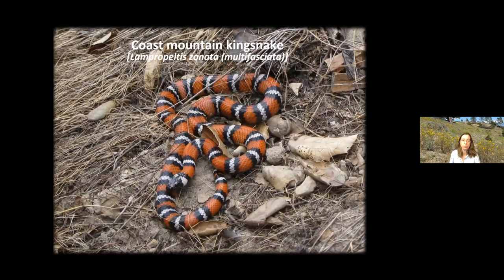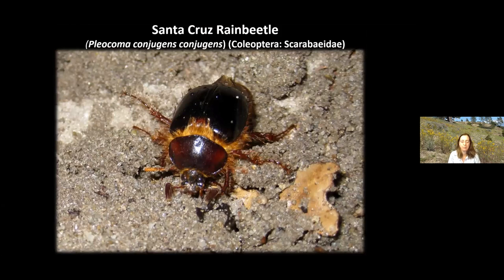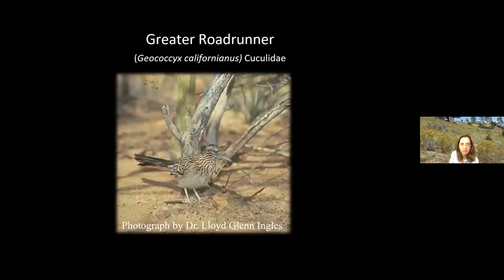Mountain king snakes are found in the Sandhills. The Santa Cruz rain beetle was also proposed for listing as endangered back in the nineties, but unfortunately wasn't accepted — not enough information. These are super cool though. They're named rain beetle because they come out when the first rains happen each fall. So if you're ever around in October when we get our first rain, head out to the Sandhills and watch them come out of the ground — they're cued by the rain to search for mates. Another species that used to be found in the Sandhills but no more is the greater roadrunner. It kind of makes sense — sandy soils, a desert-like environment very similar to what they still occupy elsewhere. They were found in the Sandhills until about the 1960s, when a lot of development and associated impacts led to their extirpation.